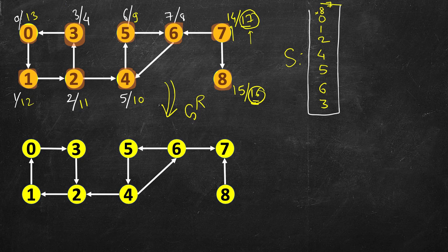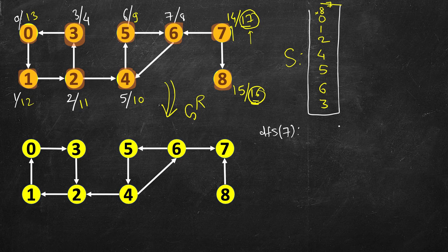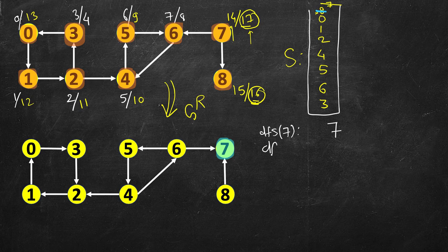We start DFS from vertex 7. Since all the edges in the reversed graph are coming into 7, we only visit 7 itself — nothing else. So 7 is printed and done. Next we pick vertex 8 and start DFS from it. It tries to go to 7, but 7 is already visited, so it just prints 8.